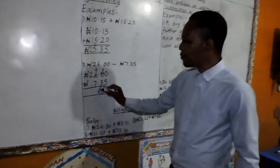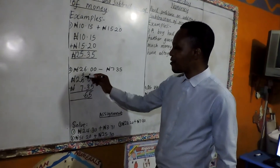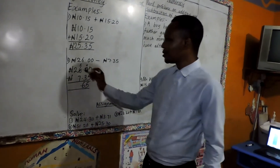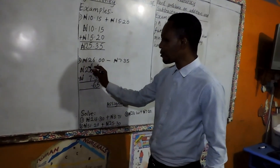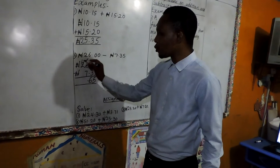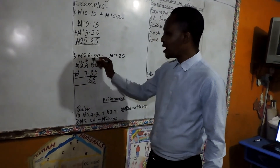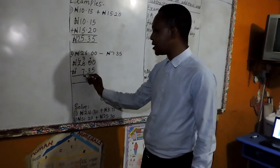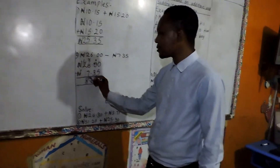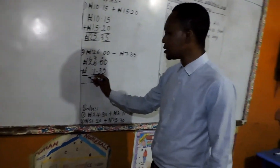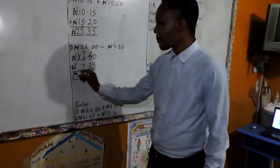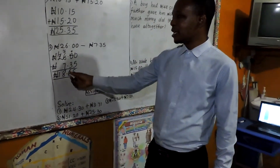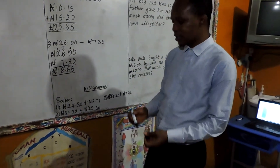Don't forget your decimal point. 5 minus 1 — it's not possible. So you have to borrow from here. This becomes 1, and this is 15. And 15 minus 7 will give us what? 8. Good. So you have your 1 down. So therefore, you have what? 18.65.